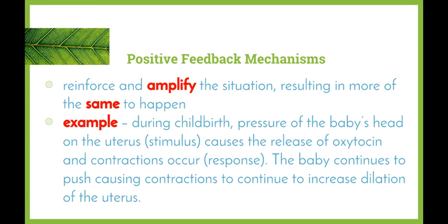In contrast, we also have positive feedback mechanisms. These aren't as common as negative feedback mechanisms, and we focus a lot more on negative feedback. A positive feedback mechanism is one that reinforces or amplifies the situation, resulting in more of the same happening. A perfect example is during childbirth. As the baby moves into the birth canal, the pressure of the baby's head on the uterus is the stimulus. This releases a chemical called oxytocin, and contractions begin to occur, which is the response. As the baby continues to push down, more contractions take place, leading the cervix to dilate, and then the baby is able to be born.